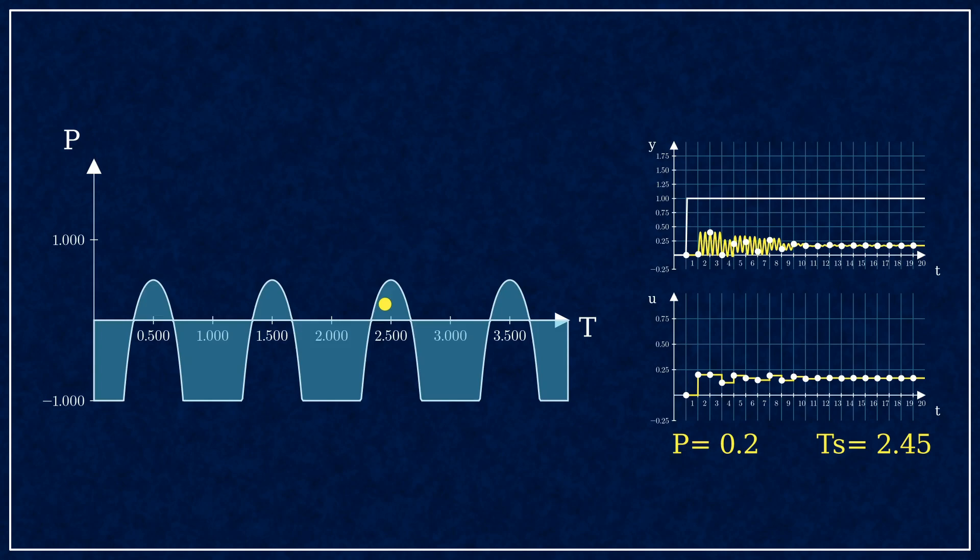So far, the plant has been a simple harmonic oscillator without damping. Let's see how damping changes the map.